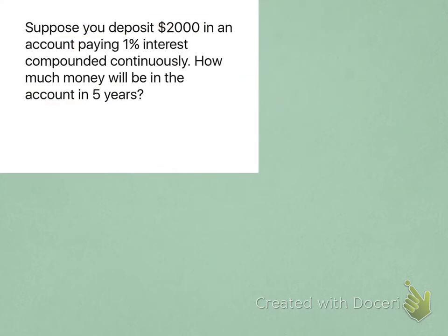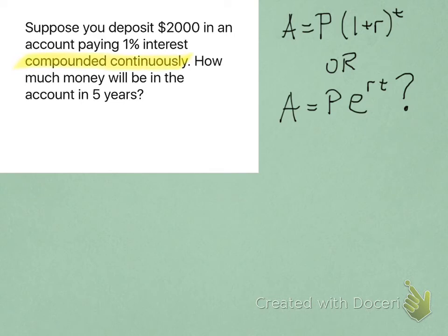Now, let's take a look at the same scenario, except we're going to compound the interest continuously this time. So, if you read the problem, you will notice that the interest is compounded continuously. That will tell you which of the two formulas you need to use. It's the PERT one.